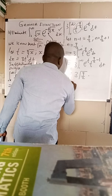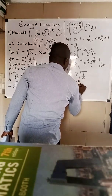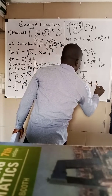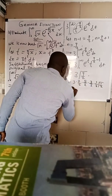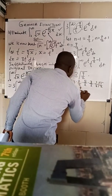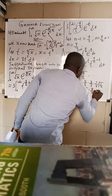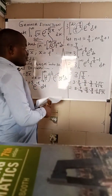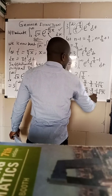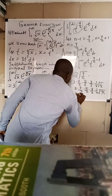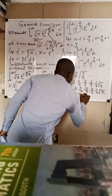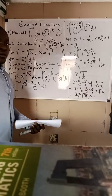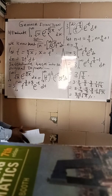Now we expand gamma(9/2): equals 3 times 7/2 times 5/2 times 3/2 times 1/2 times gamma(1/2). Since gamma(1/2) equals root pi, this equals 3 times 7/2 times 5/2 times 3/2 times 1/2 times root pi. Evaluating: 1 times 2 times 3 times 4 gives 16 in the denominator, and 3 times 105 over 16 times root pi gives 315 over 16 times root pi. That is the answer to this particular problem. Now let's go to number 3.